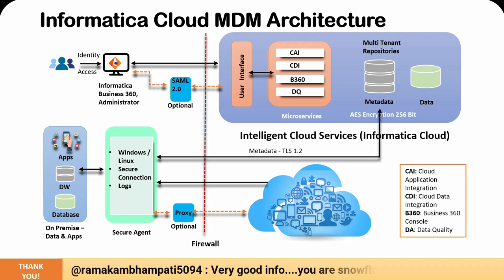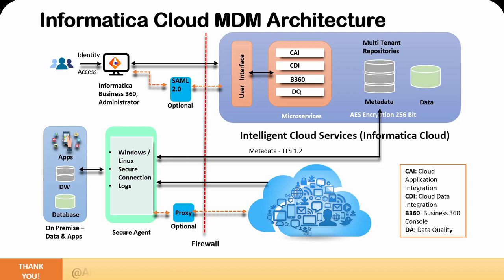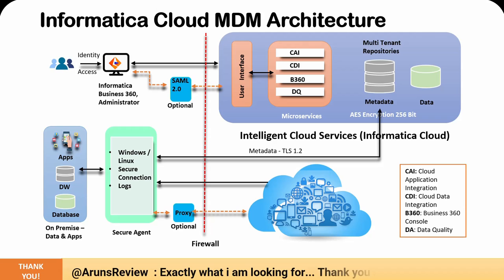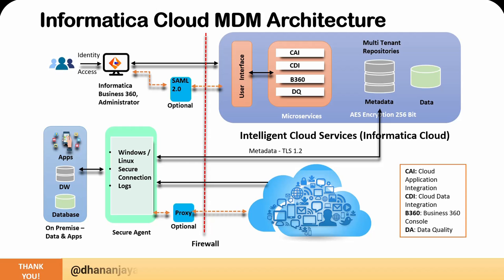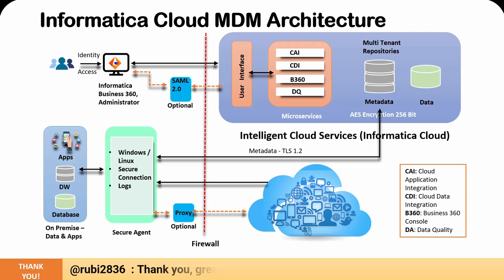Now let's understand how the interaction happens between the on-premise component and the Informatica IDMC component. Starting with the very first action: on the left-hand side, the people icon represents the business users, administrators, or developers. These users will be accessing Informatica services such as Informatica Business 360 or the Informatica Administrator component, and that will be accessed through the identity service. You have to log in through identity access, which will then connect you to the intelligent cloud services — the Informatica-provided cloud platform. You also have the option to access these intelligent cloud services via SAML authentication.